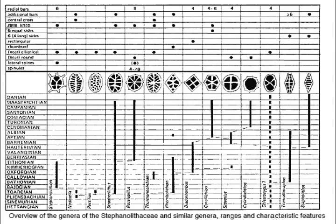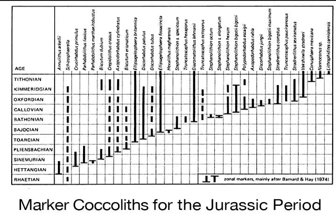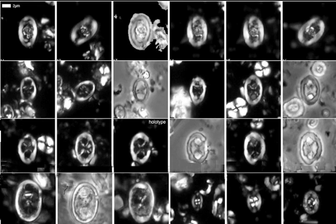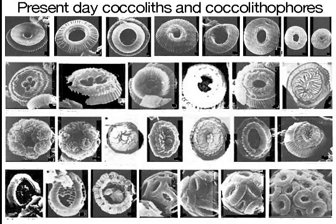Coccoliths are employed in biostratigraphy, for a number of their form species have a nearly worldwide distribution. Their use requires intensive study using a scanning electron microscope, or as pictured on this slide, a hundred-power or more light microscope. The ubiquity of some forms of coccoliths makes them useful where larger fossils are absent. Coccoliths also provide data for climate and water temperature studies.